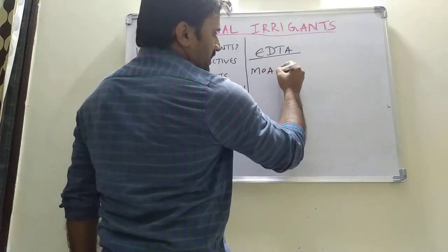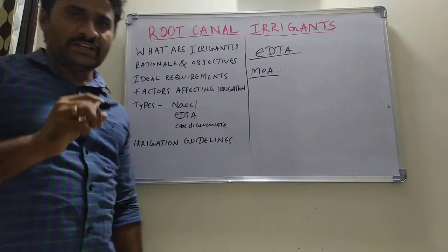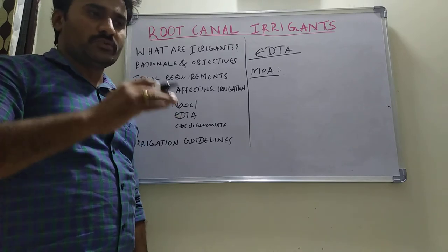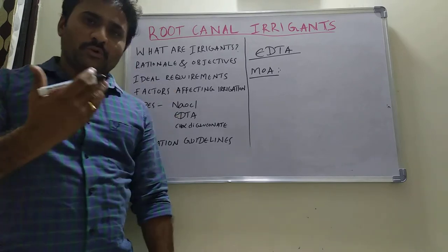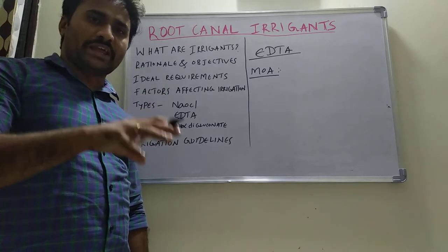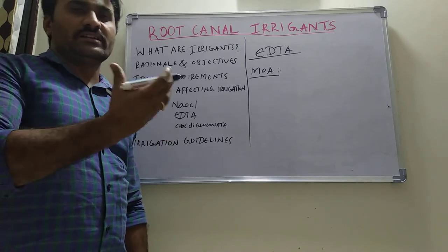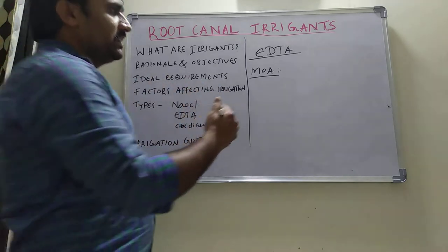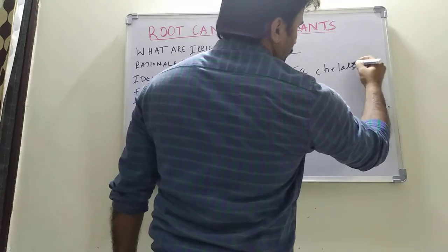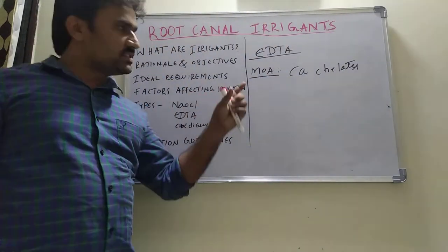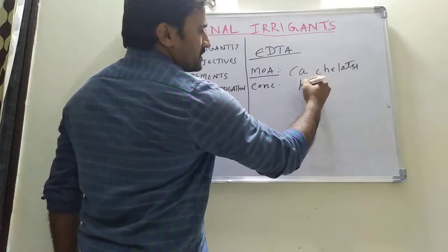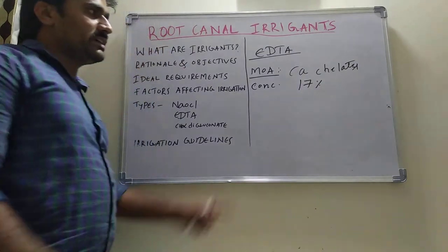EDTA's mechanism of action: it is a chelating agent that chelates with the calcium ions of the dentine to produce calcium chelates. By producing calcium chelates, it makes the dentine softer and more friable, so we can easily instrument the dentine. The concentration of EDTA used is 17%.